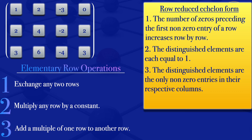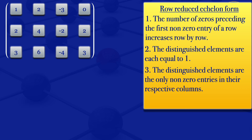So we can use those three elementary row operations to reduce the matrix into row reduced echelon form. In this case, I'll start by looking at the distinguished elements — the first non-zero entry of a row. For the first row, it's a one. For the second row, it's a two. For the third row, it's a three. But using condition one, we want the first non-zero entry to increase row by row, so we need zeros here to be increasing before we get to the distinguished elements.